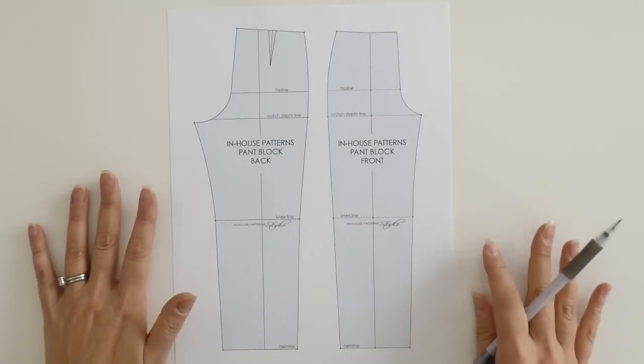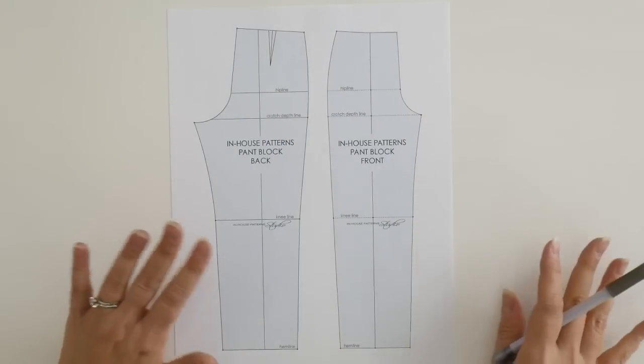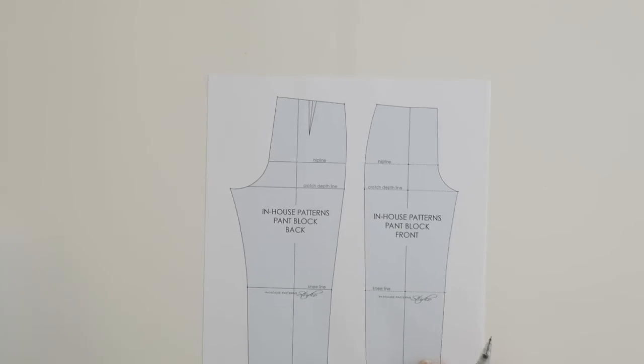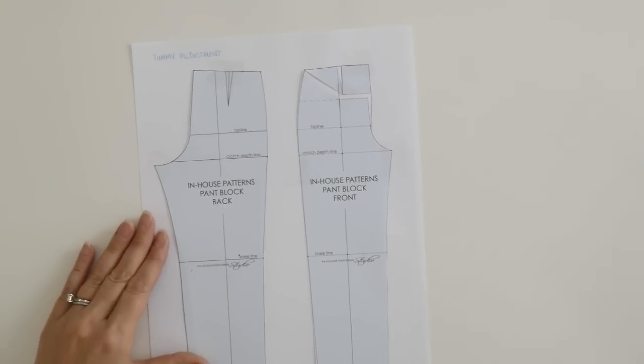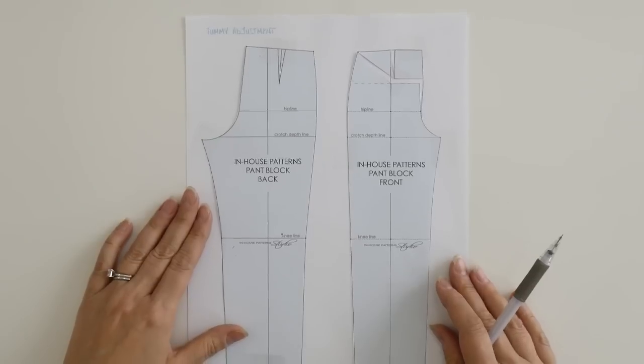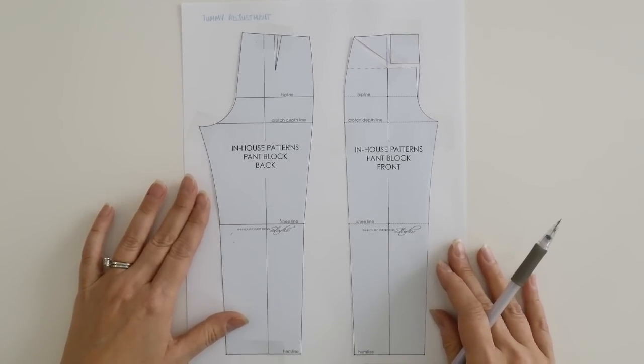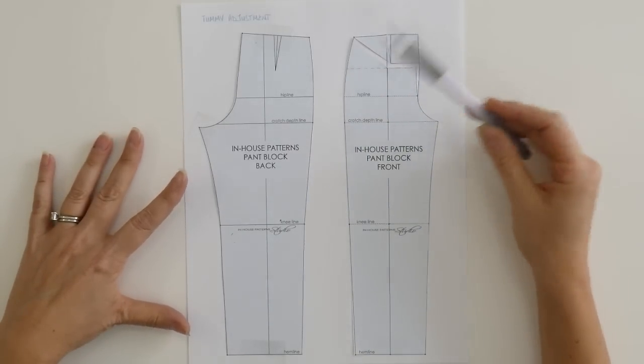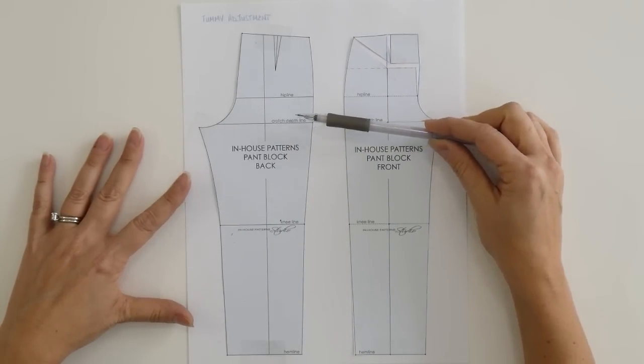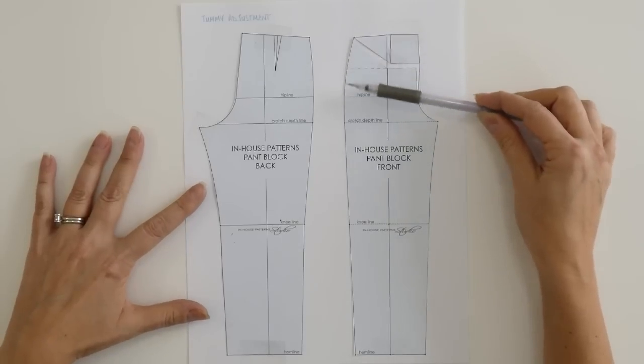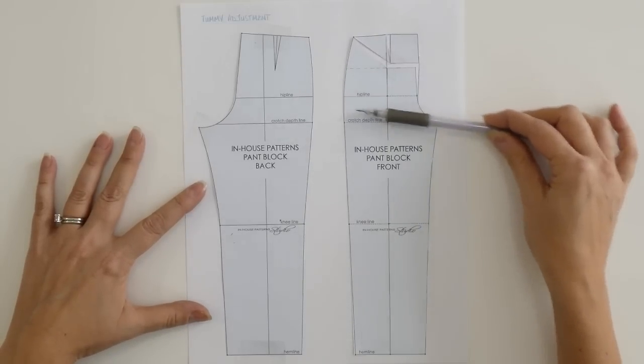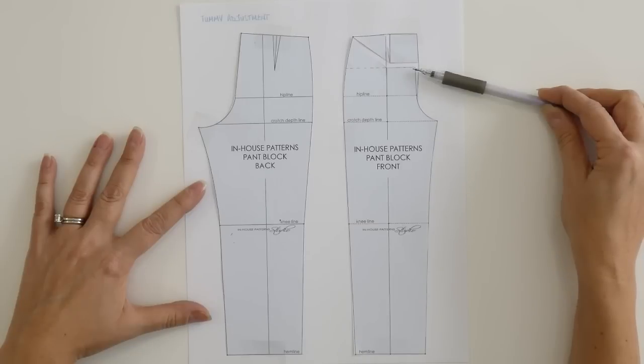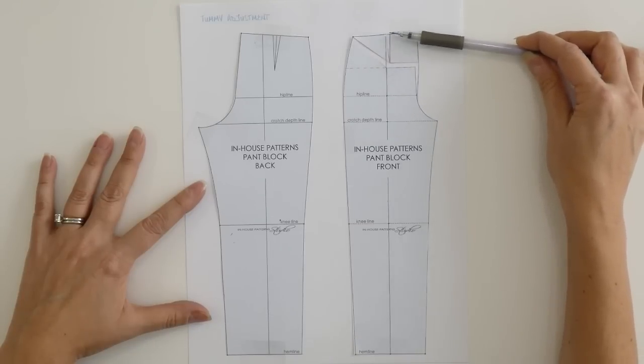Now, let's get started with what the final pattern adjustment looks like. Here it is. And you can see here that the front is adjusted, but the back is not. You can see that the front in terms of the pattern adjustment, you are gaining more width over the front pattern as well as more length.